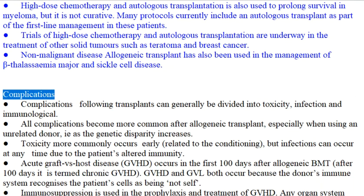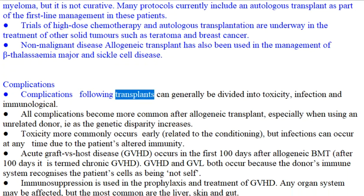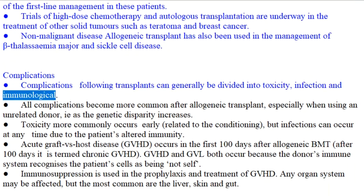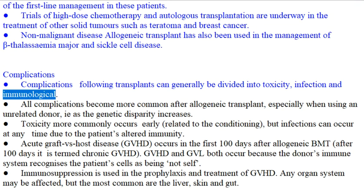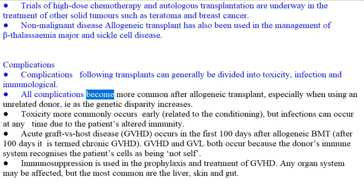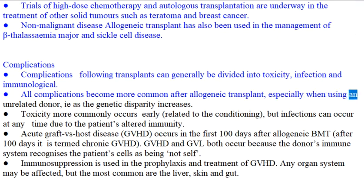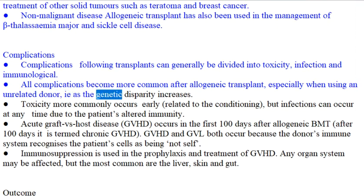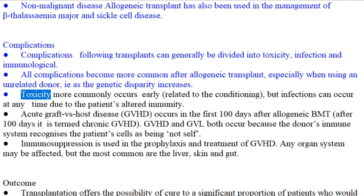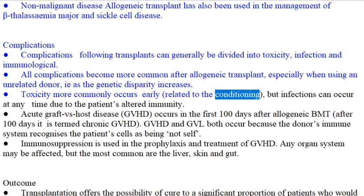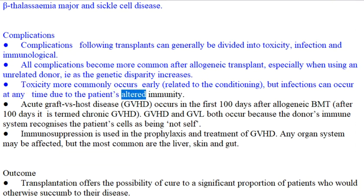Complications following transplants can generally be divided into toxicity, infection, and immunological. All complications become more common after allogeneic transplant, especially when using an unrelated donor — i.e., as the genetic disparity increases. Toxicity more commonly occurs early, related to the conditioning, but infections can occur at any time due to the patient's altered immunity.